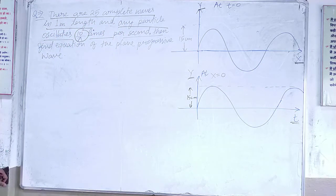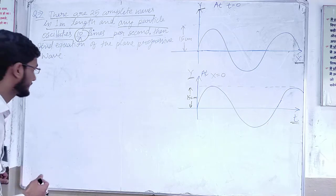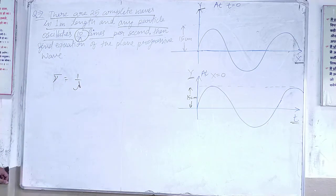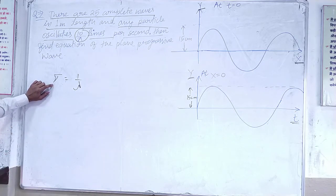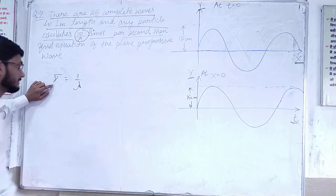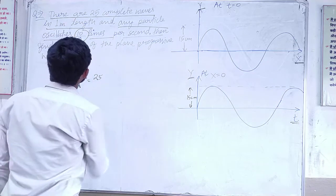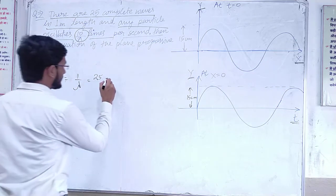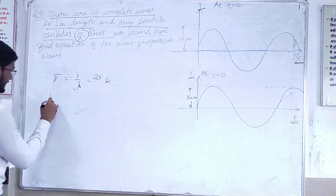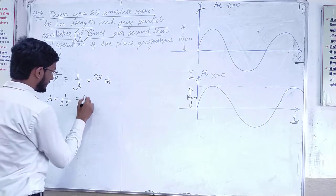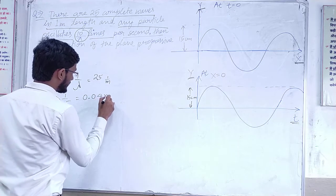This is the definition of wave number. Wave number is basically 1/λ. Wave number is the number of complete waves in 1 meter, so this is 25 per meter. So lambda is 1/25, which gives us 0.04 meter.